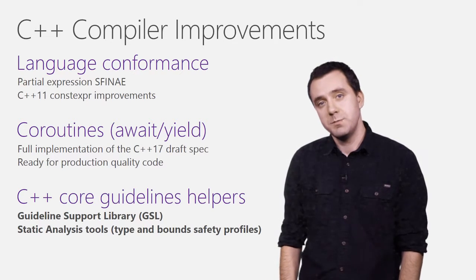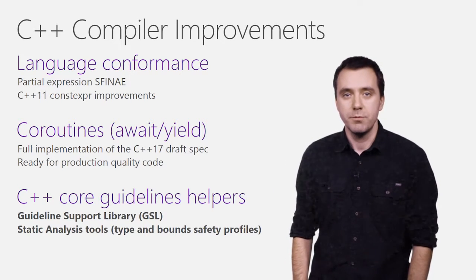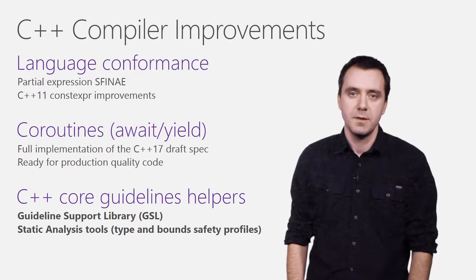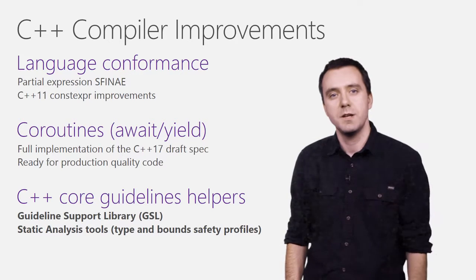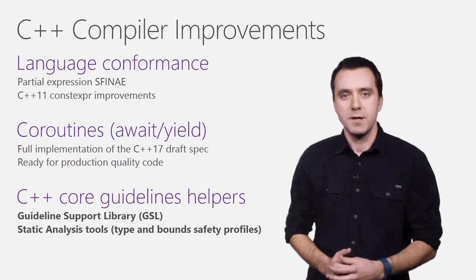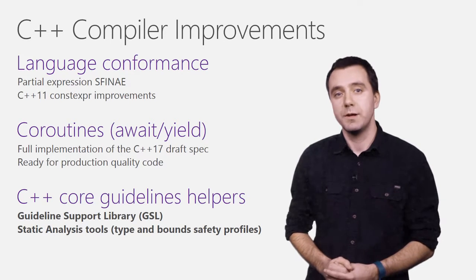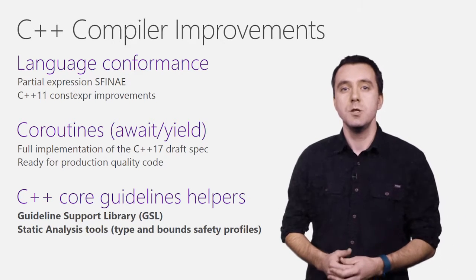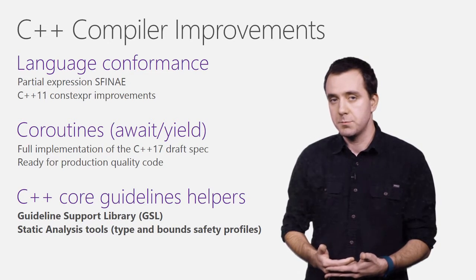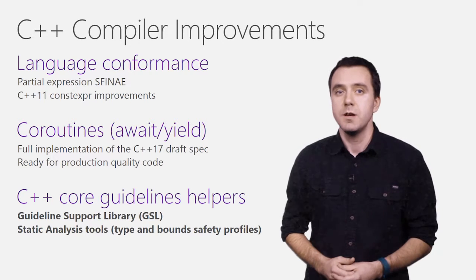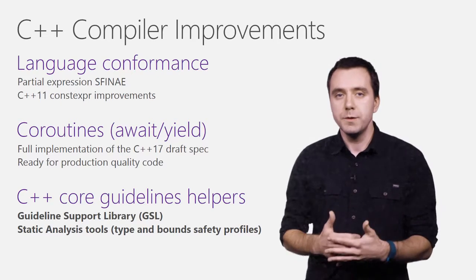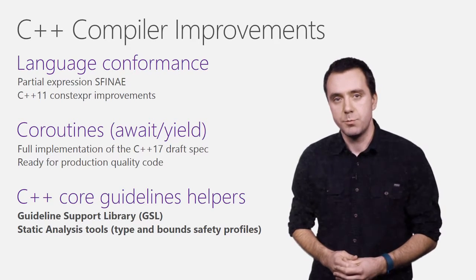If you attended or watched CppCon, the C++ conference, you may already be familiar with the C++ Core Guidelines that Bjarne announced. I'll encourage you to go check out his CppCon keynote. To aid with the guidelines adoption, Microsoft released on GitHub a helper library called GSL, and also announced a new set of checkers for type and bounds safety that will be part of our static analysis. In the Update 1 timeframe, we are releasing these two components as a new NuGet package to make it super easy to use in any of your projects.